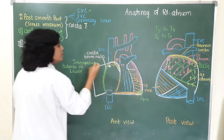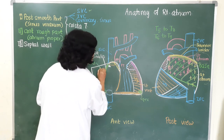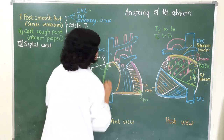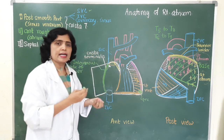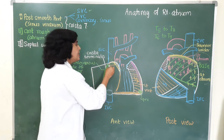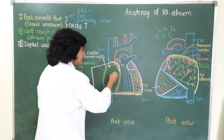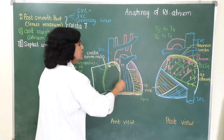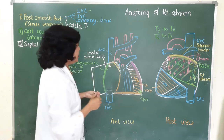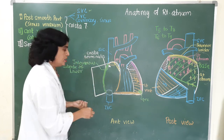At the upper end of the right atrium we see the opening of the superior vena cava. Just below this opening there is an elevation called the intervenous tubercle of Lower. It is prominent in quadrupeds but scarcely visible in human beings, and it probably directs blood from the superior vena cava to the right ventricle.